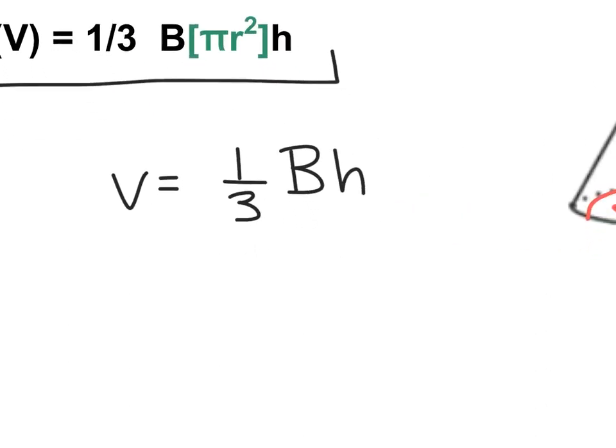So if I take this formula a little deeper, volume equals one-third times my area of the circle, which is simply πr². And then I multiply by my height. This is the cone formula.